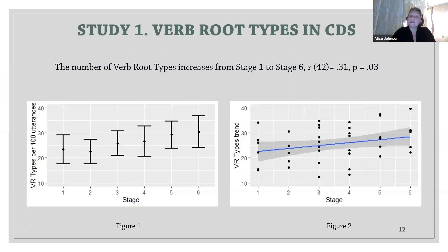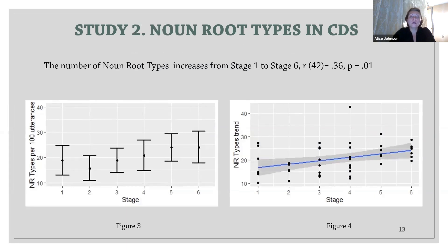In the first study, we investigated the use of different verb roots in the speech of the mothers. Figures one and two demonstrate how the number of verb root types in child-directed speech increases with the stage of the children's linguistic development. A similar trend was observed in the second study, where the number of noun root types in the speech of the mothers positively correlated with the stage.